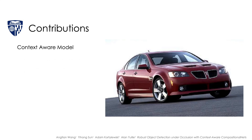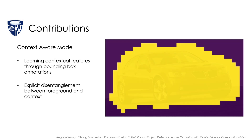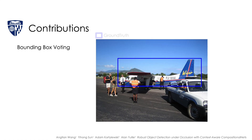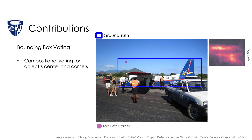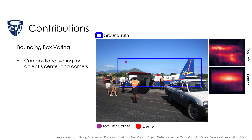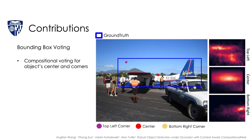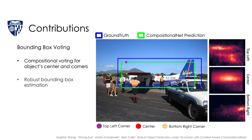First, we propose a method to learn contextual features through bounding box annotations and disentangle foreground and context representations by segmenting the objects during training. Also, we perform a compositional voting for the object's center and corners to estimate the bounding box robustly.